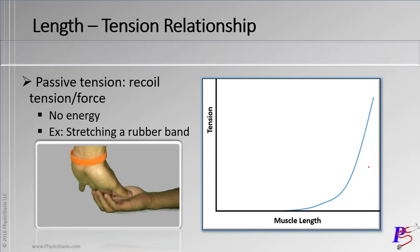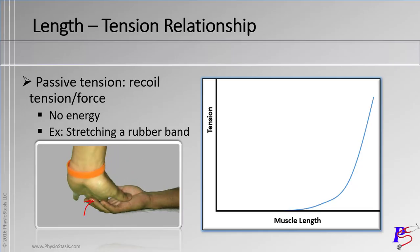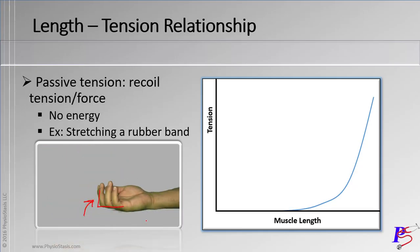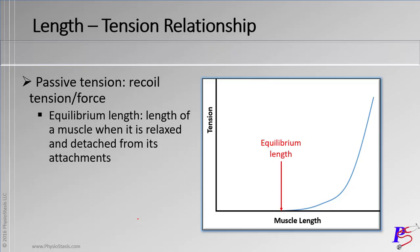Another way to look at it: I put my hand here, and as I push my fingers down, there's a certain recoiling force that brings my fingers back up. That's the passive tension or the recoil of the muscle. Lastly, equilibrium length is basically the length of the muscle before you start to stretch it, just when it's relaxed — imagine it's detached from its attachments such as its bones.